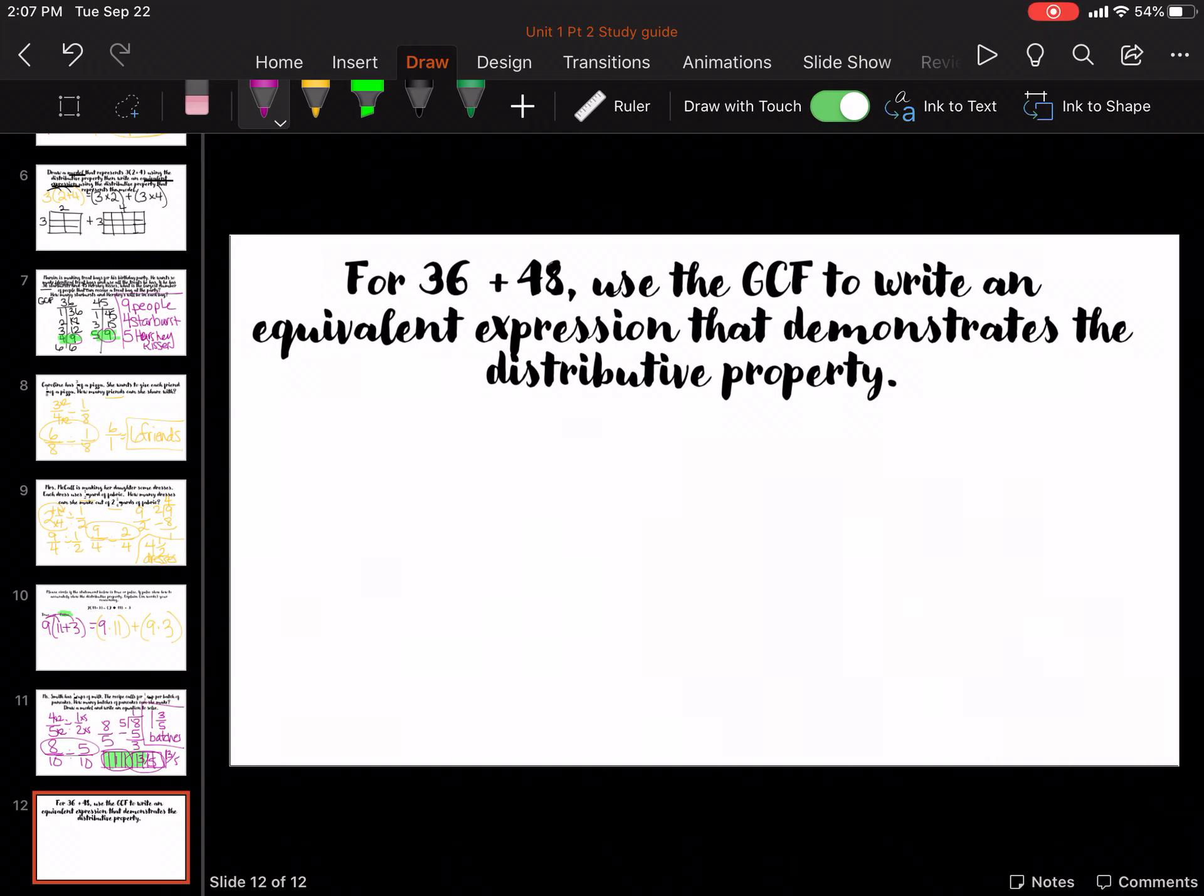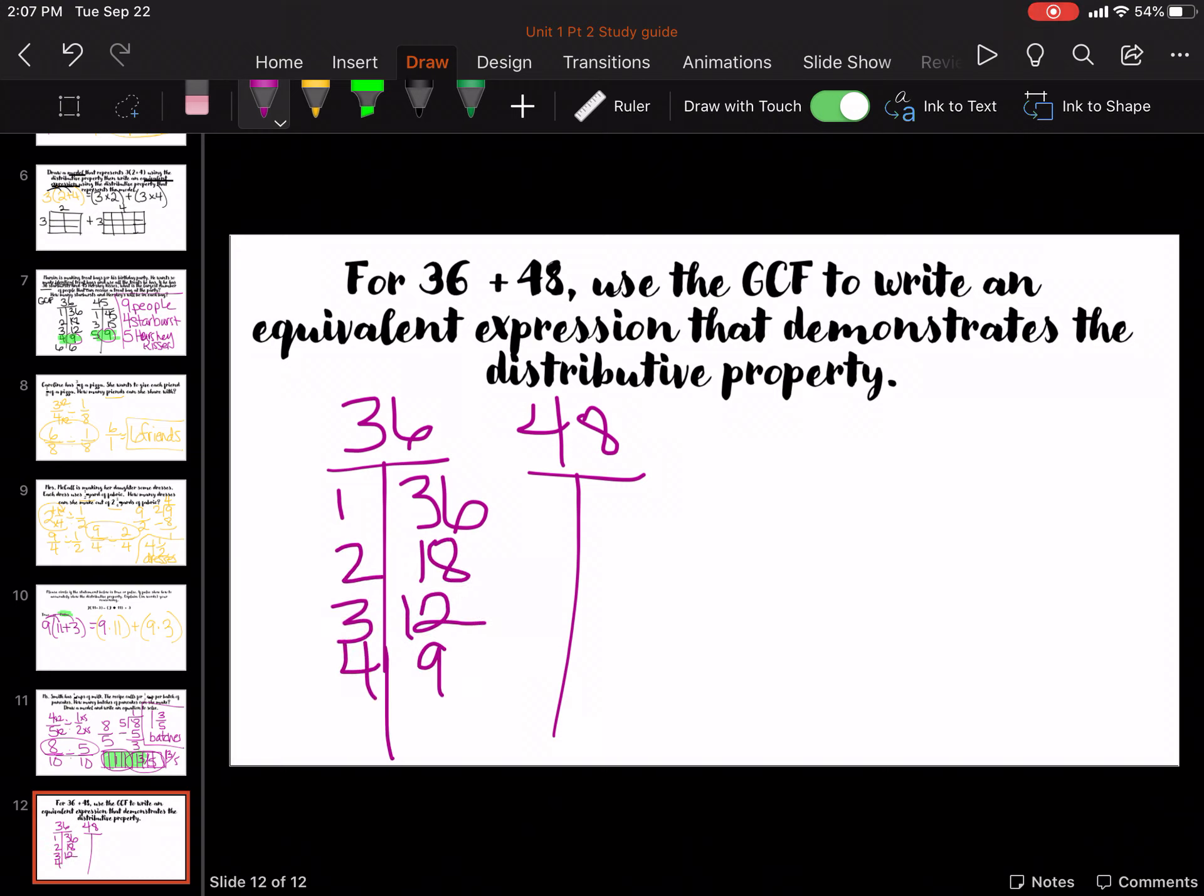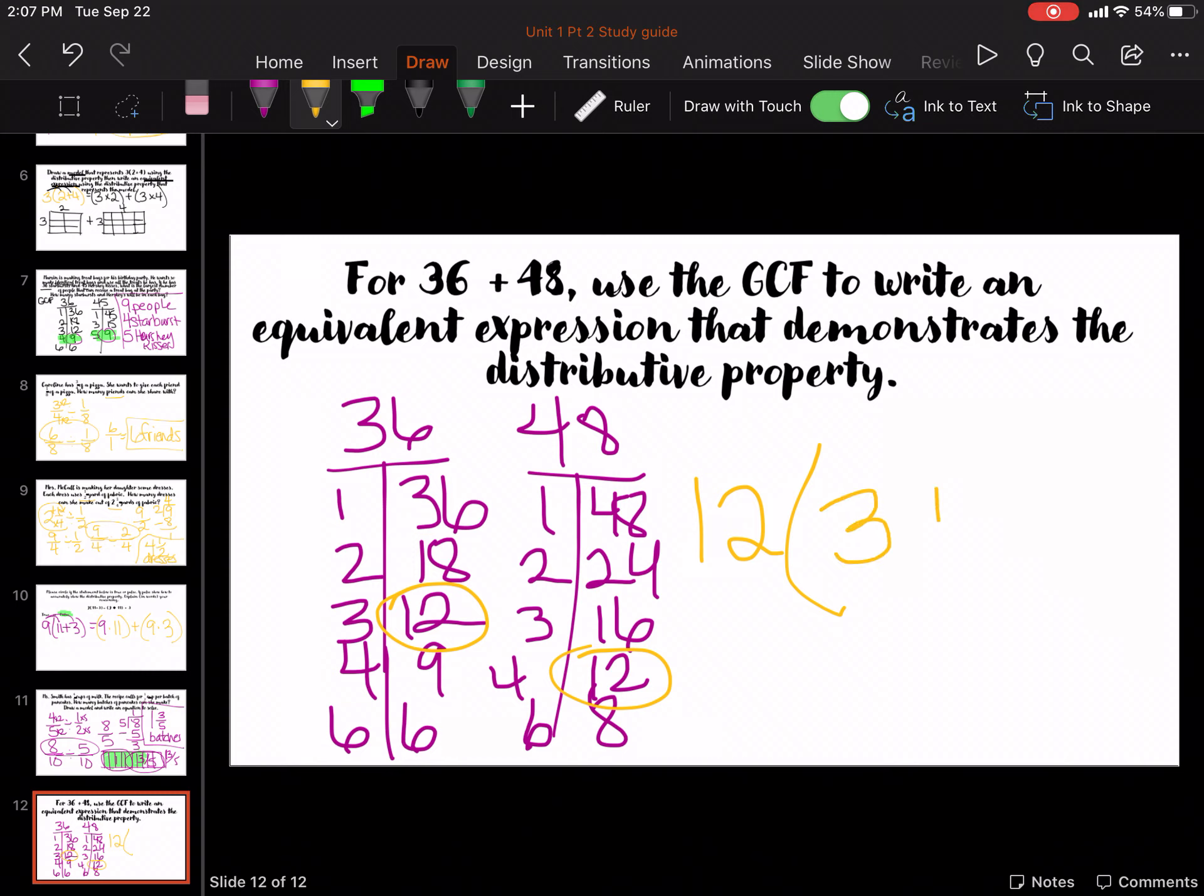For 36 and 48, use the GCF to write it with the distributive property. So, we have 36 and 48. 1 and 36, 2 and 18, 3 and 12, 4 and 9, 6 and 6. 1 and 48, 2 and 24, 3 and 16, 4 and 12, and 6 and 8. GCF is 12. So, 12 comes on the outside. And then, remember the factor that goes with it's on the inside. So, it's 3 plus 4. It is addition here. So, it's addition here. And we can always double check. 12 times 3 is 36. 12 times 4 is 48.